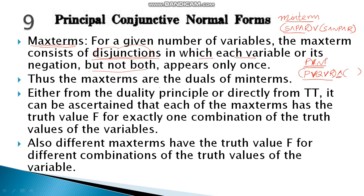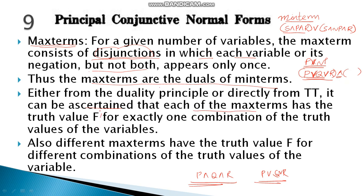The terms in a max term are disjunctions, and these sums are joined by AND, which is why this is called Product of Sum. The max terms are duals of min terms — whenever there is an equation P AND Q AND R, its dual will be P OR Q OR R. So max terms are duals of min terms.